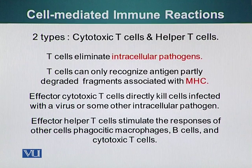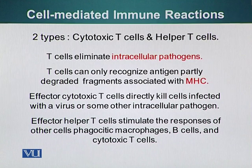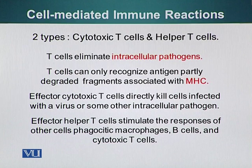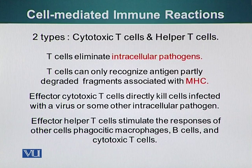Effector cytotoxic T cells directly kill cells infected with a virus or some other intracellular pathogen. Effector T cells also stimulate the responses of other cells which play an important role in the immune system — for example, macrophages and B cells — and they can also regulate cytotoxic T cells. So this is the cellular part of immunity we are talking about. The humoral part, which we have already discussed, was the B cell mediated response.